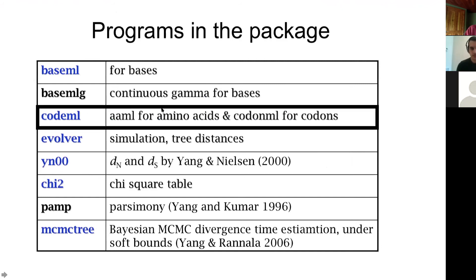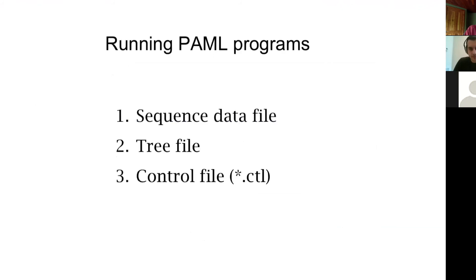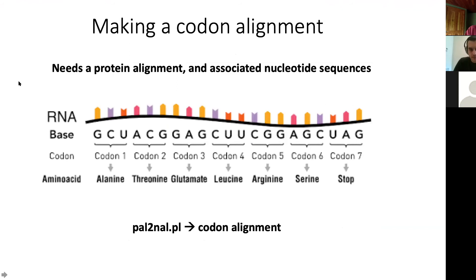CodeML is what we're going through in the tutorial. CodeML is basically like baseML — the two programs go hand in hand — but CodeML is optimized for amino acids or protein sequences. There are basically two types of files you can provide to PAML: a sequence data file and a tree file. You provide these via a control file, which holds the paths to both. The sequence file must contain a codon alignment — an alignment representing nucleotides arranged in triplets as they code for amino acids — and in the tutorial we'll go over how to make one.